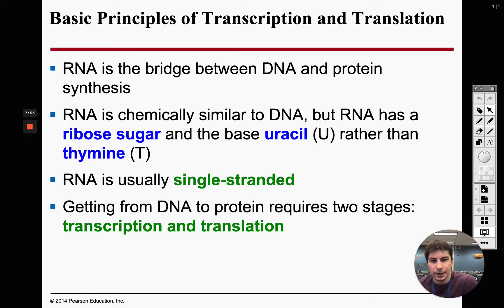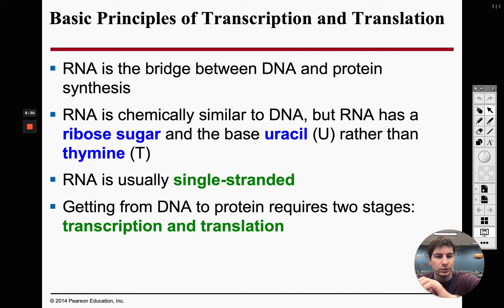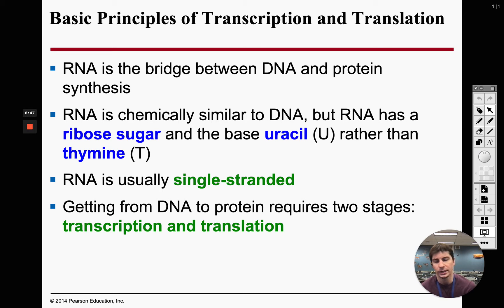RNA is our first target product and it's very similar to DNA with a few differences. Instead of thymine, which is in DNA, RNA has uracil. Remember: purines are adenine and guanine — 'pure agony.' Thymine is a pyrimidine, and in RNA, uracil replaces thymine as a pyrimidine. RNA is also usually single-stranded, though there are some instances of double-stranded RNA.